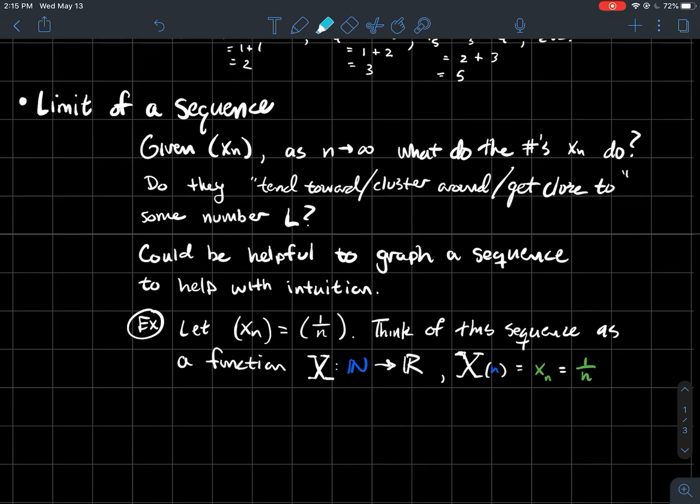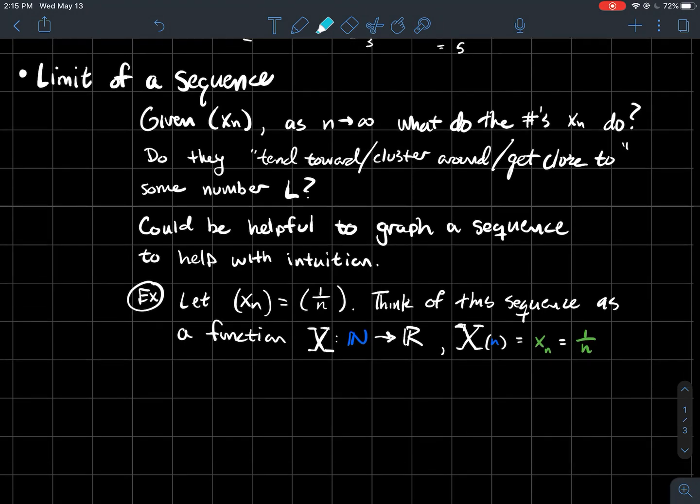So it could be helpful to maybe graph a sequence to help with some intuition. I've picked a sequence, xₙ is just one over n. So one, one half, one third, one fourth, etc. And another way you can think about sequences is as a function. So I write it as this function capital X, and it inputs a natural number and spits out a real number.